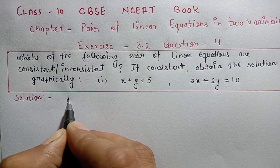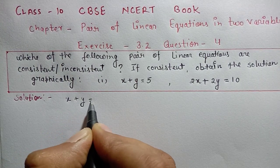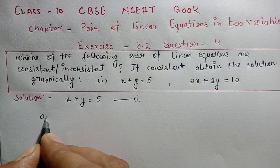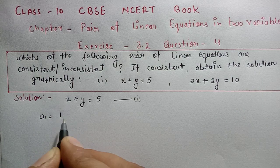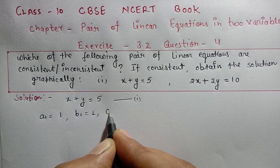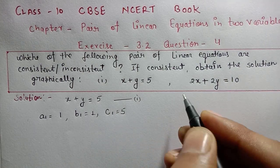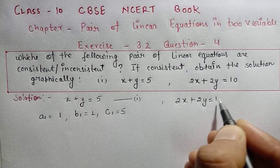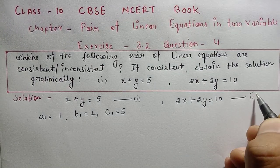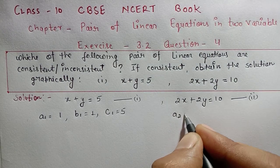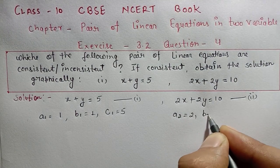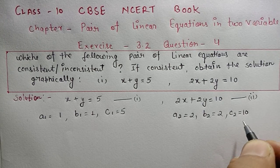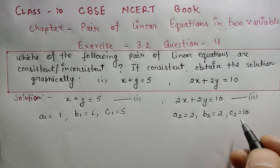First equation यहां पर given है: x plus y equals to 5. इसे हम compare कर लेते हैं — a1 equals to 1, b1 equals to 1, and c1 equals to 5. Second equation है: 2x plus 2y equals to 10. So a2 equals to 2, b2 equals to 2, c2 equals to 10.